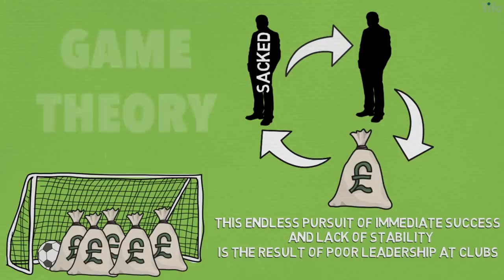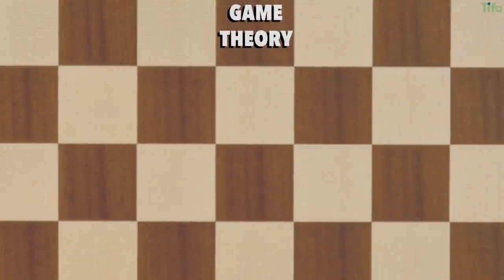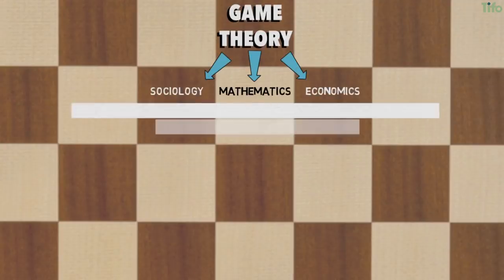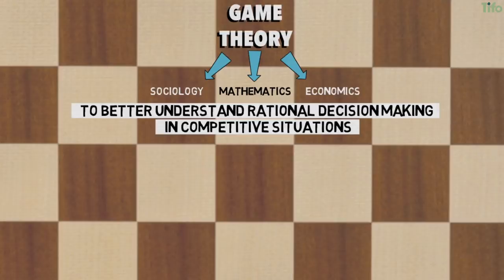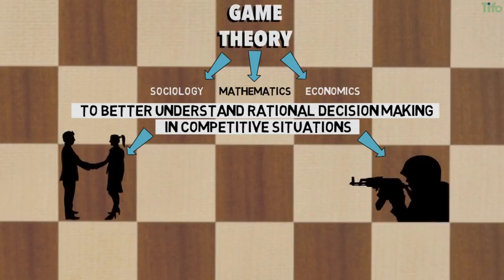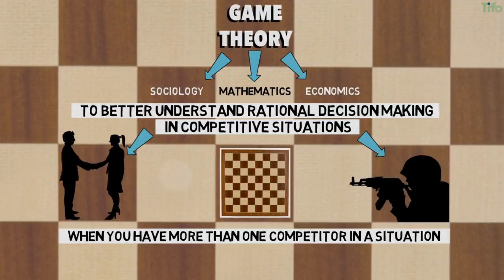One way that can be explained is through the concept of game theory. Game theory is a branch of mathematics that also uses elements of sociology and economics to better understand rational decision-making in competitive situations. It is used to understand a wide variety of topics, from business to war. The premise is that when you have more than one competitor in a situation, you have a game.